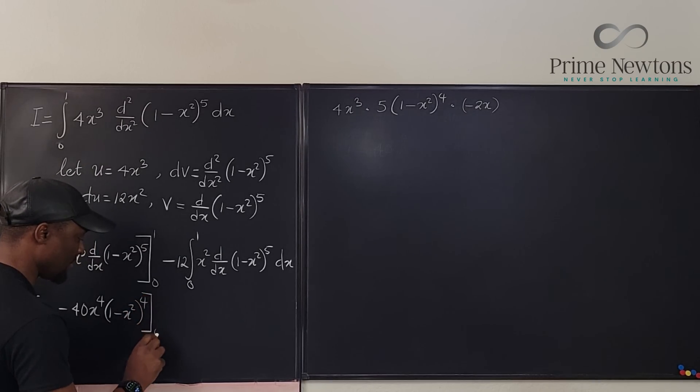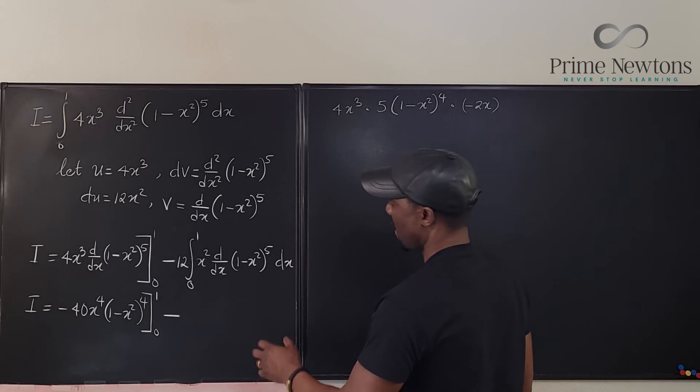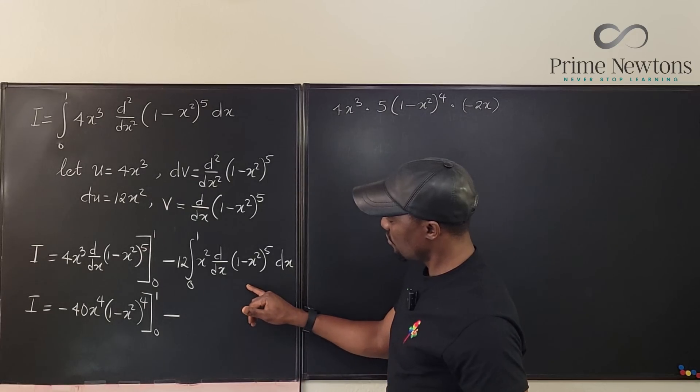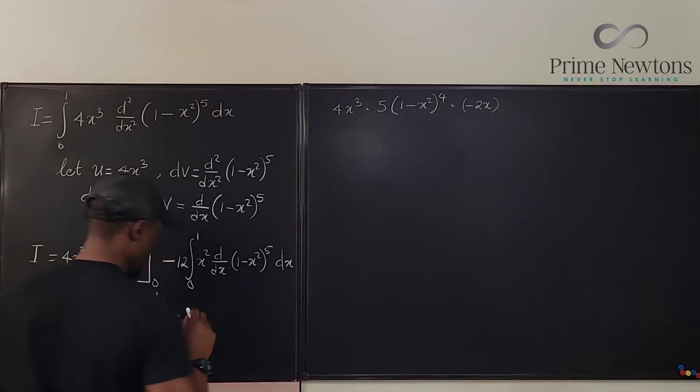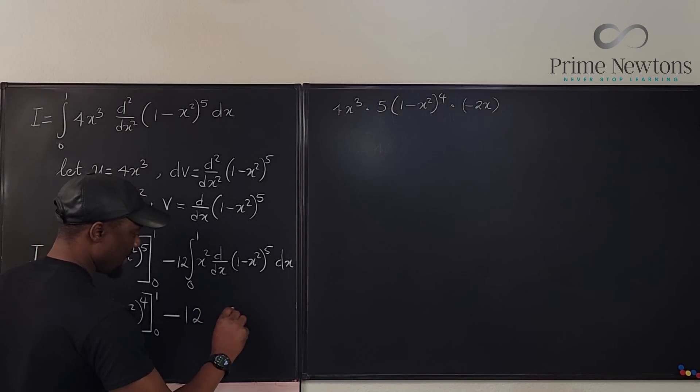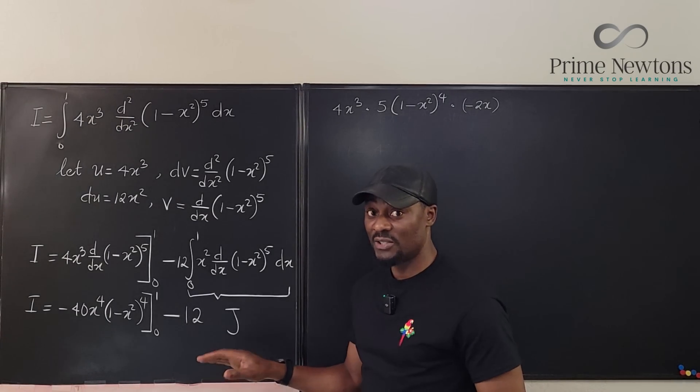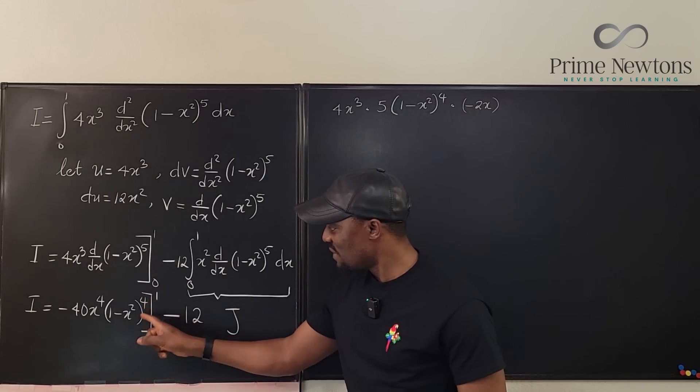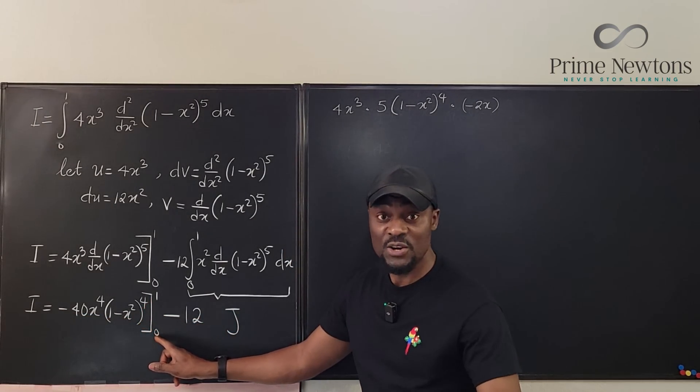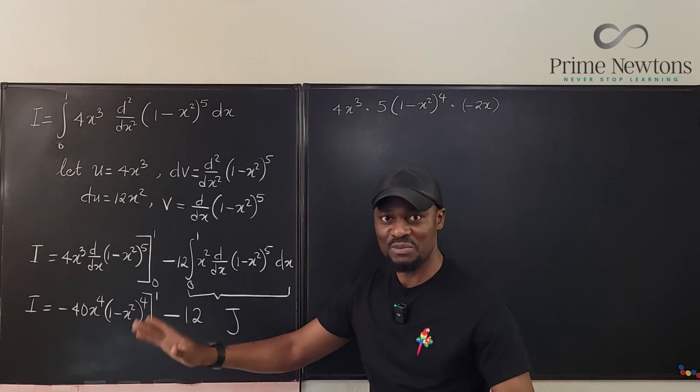So we got I equals negative 40x to the fourth times 1 minus x squared to the fourth evaluated from 0 to 1 minus, now I'm just going to write this as J so we're going to do minus 12J. I call this integral J. Now the reason why I'm going to do this is because you'll notice that the next focus we're going to have is just going to be on this guy. Why? Because if you evaluate this expression, if you plug in 0 first, if you plug in 0 here this is going to be 0. 0 times anything you do is going to be 0.